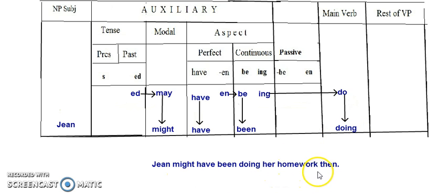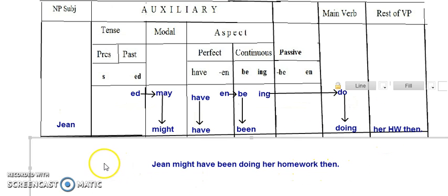Now what's left in the sentence? Her homework then. Is there any verb here? No, there is no verb, and it doesn't belong to that noun phrase. It belongs to the rest of the verb phrase, so we'll just write everything here, her homework then, in the rest of the verb phrase.